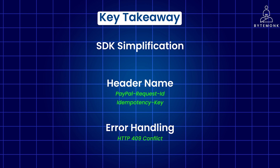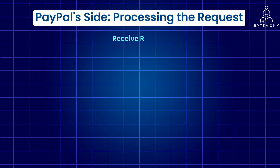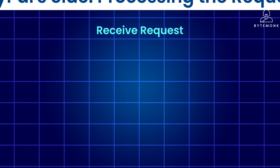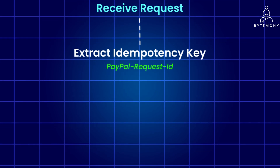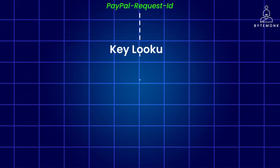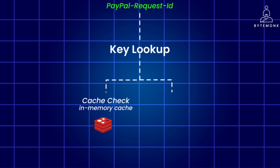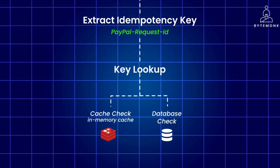Let's dive deep into how PayPal processes a client request with an idempotency key. PayPal's API endpoint receives the payment creation request from the client. The system extracts the idempotency key — in this case, PayPal-Request-ID — from the request headers. PayPal first checks its in-memory cache, for example Redis, for the idempotency key. If found, it indicates that a previous request with the same key was processed. If not found in the cache, PayPal checks its persistent storage — maybe a relational database — to see if it has processed a request with that key before.